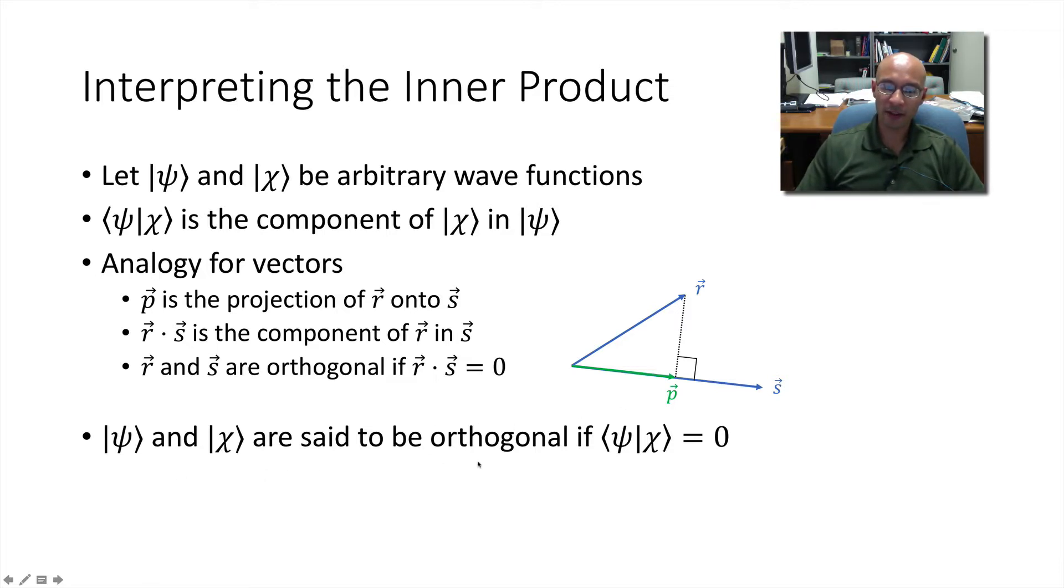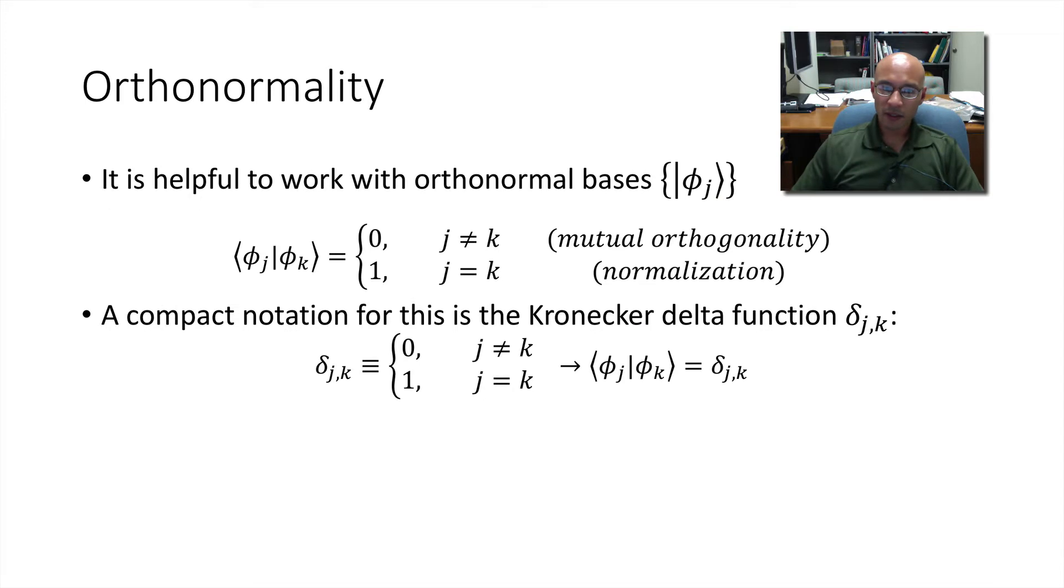Also, we say that r and s are orthogonal, if their dot product is zero. Likewise, psi and chi are said to be orthogonal, if their dot product or their inner product is zero. So I'd like to introduce the concept of orthonormality.